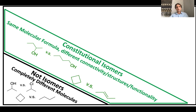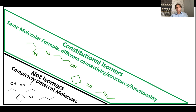Similarly, cyclobutane and 2-butene both have the formula C4H8 — four carbons and eight hydrogens — but the functionality is different. One is a cycloalkane and the other is an alkene with a pi bond, and the reactivity of an alkene is very different from that of an alkane. So constitutional isomers have the same molecular formula but differ in connectivity, structure, and functionality.